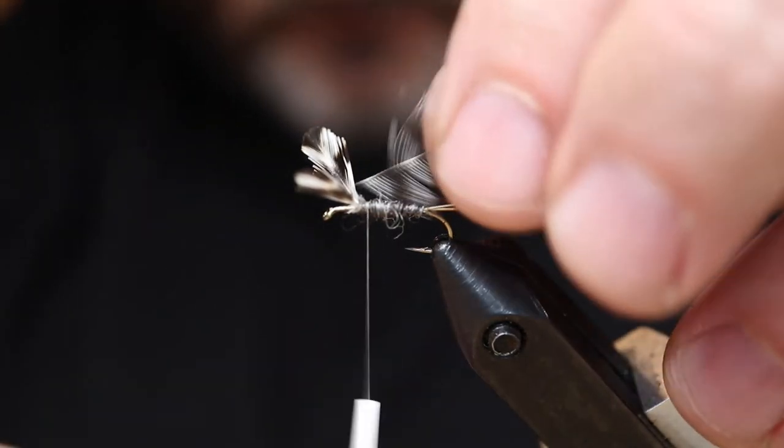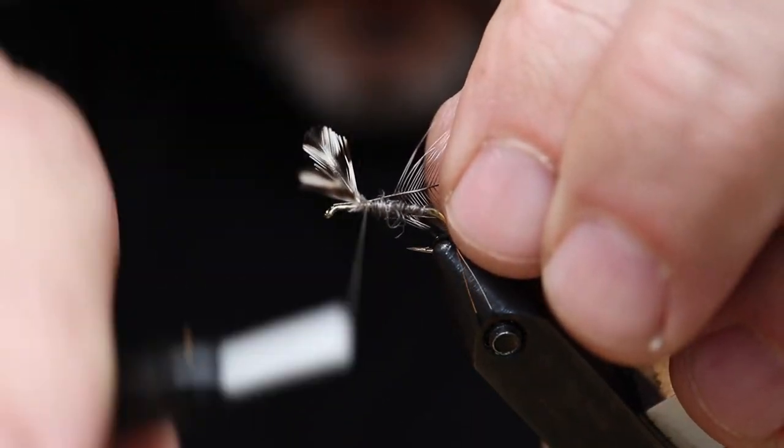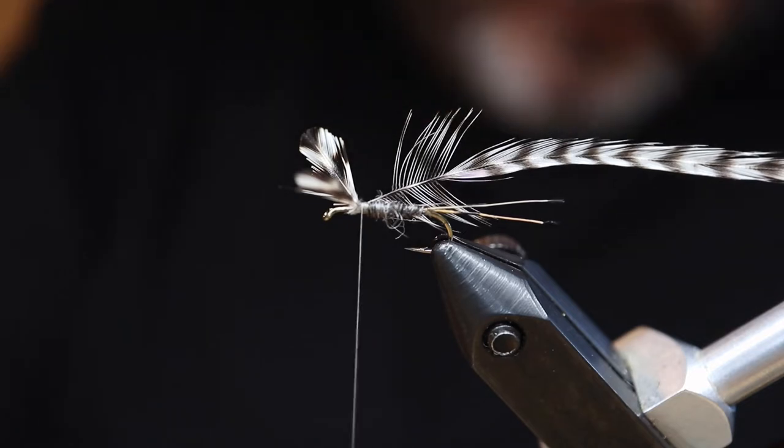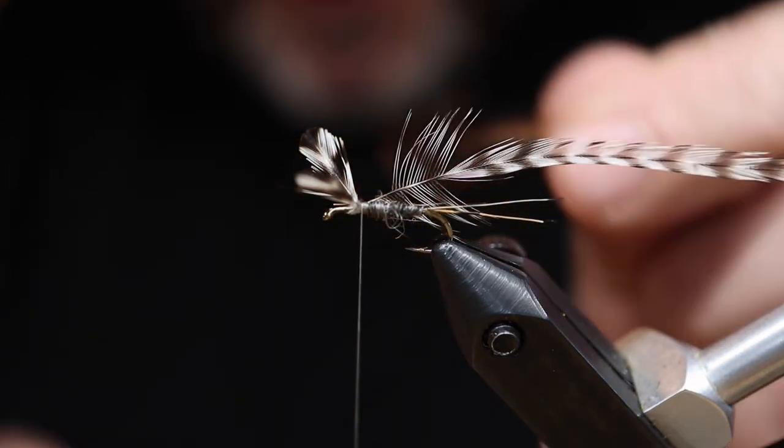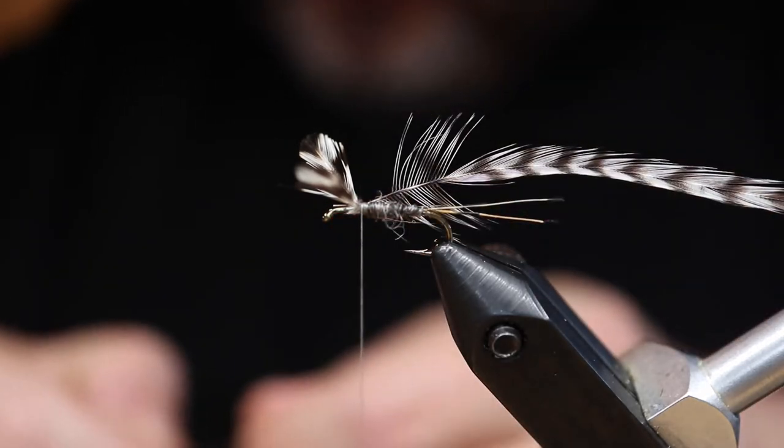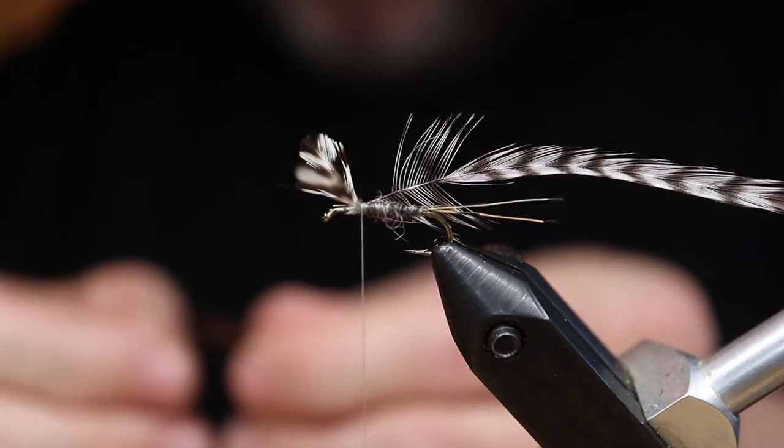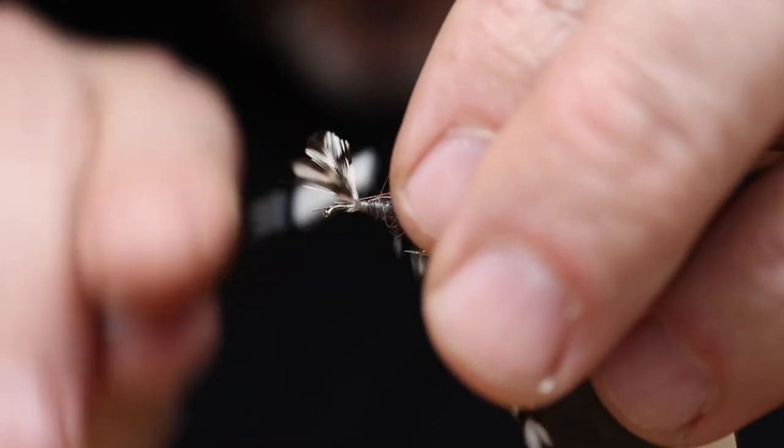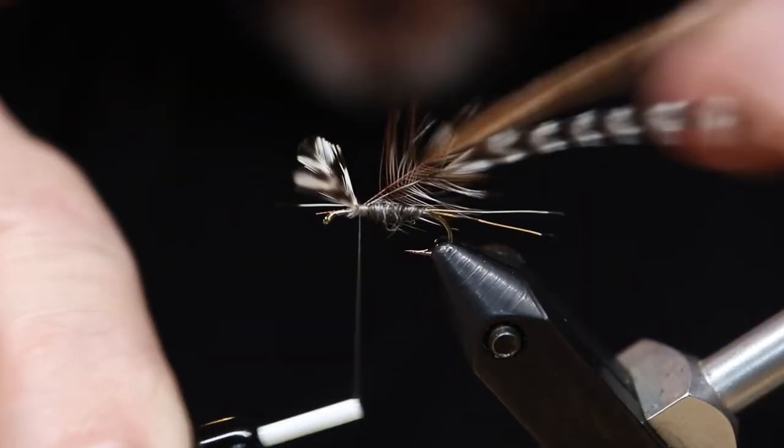This hackling is going to be a grizzly and a brown. I'm using cape feathers here from Collins. And I'm going to wrap a bunch behind the wing and only a couple wraps in front of the wing. Again, because this was really advanced. Later, after I did this video, I got a great book by Smedley.